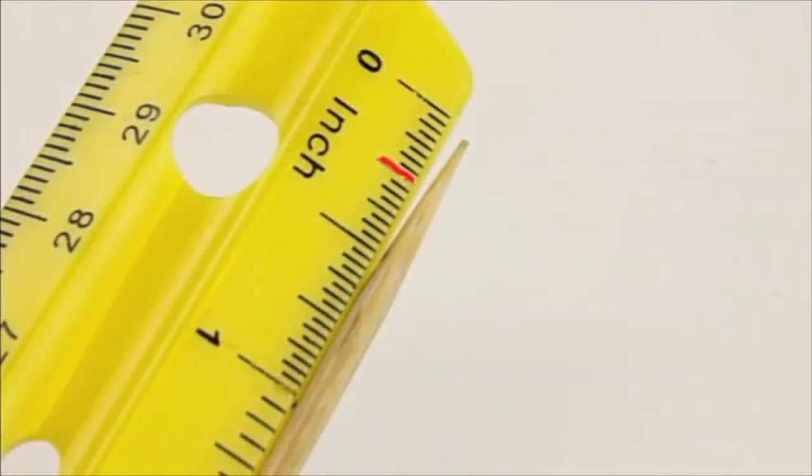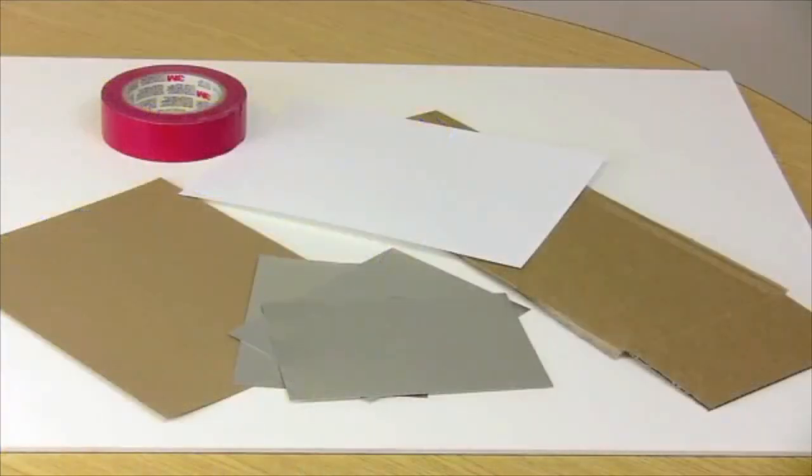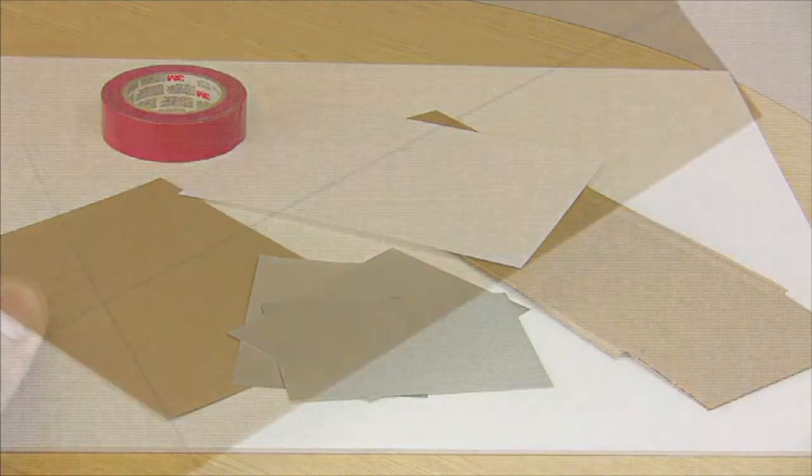Cut off the tips of the skewers but only remove 6mm which is about a quarter of an inch. Go and gather some materials for your blades. You can use cardboard, cardstock, tape or whatever else you have laying around. I am going to use chipboard to make my blades.